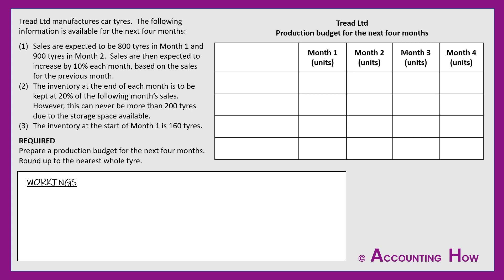We're going to look at two questions in this video, so let's get stuck into the first one. Tread Limited manufactures car tyres. The following information is available for the next four months. Item one is sales, item two is the inventory at the end of each month, and item three is the inventory at the start of month one. What's required is to prepare a production budget for the next four months, rounding up to the nearest whole tyre.